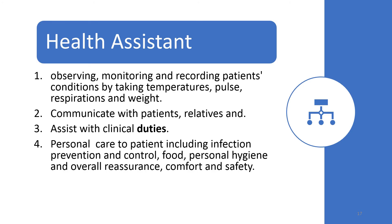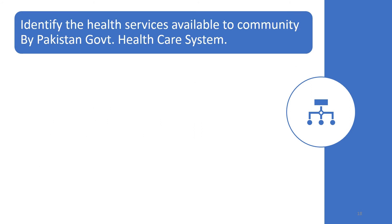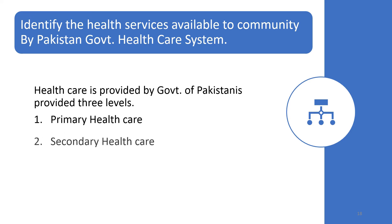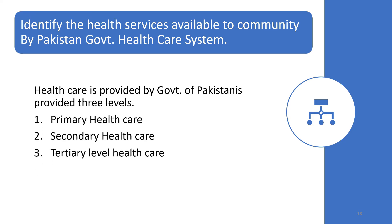So here we have 11 health team members completed. The next question is: identify the health services available to the community by the Government Health Care System of Pakistan. Health care is provided by the Government of Pakistan at three levels: Primary Health Care, Secondary Health Care, and Tertiary Health Care System.